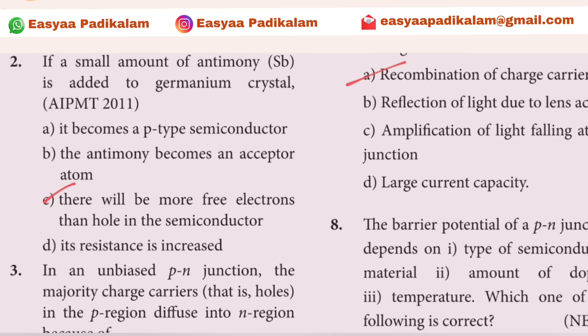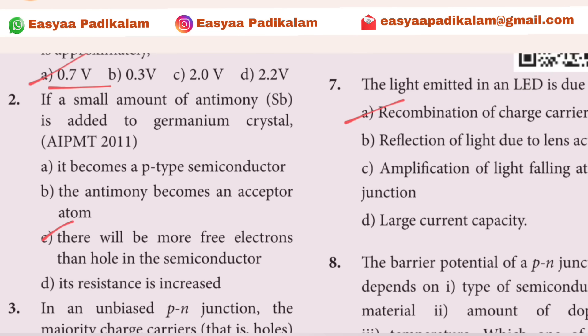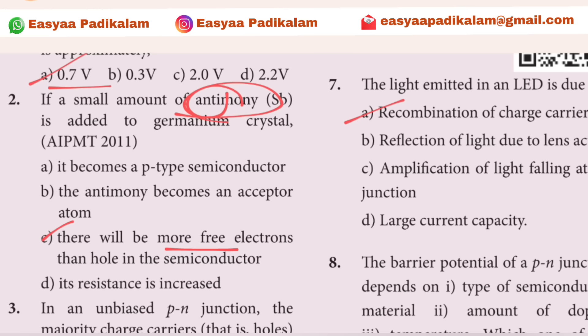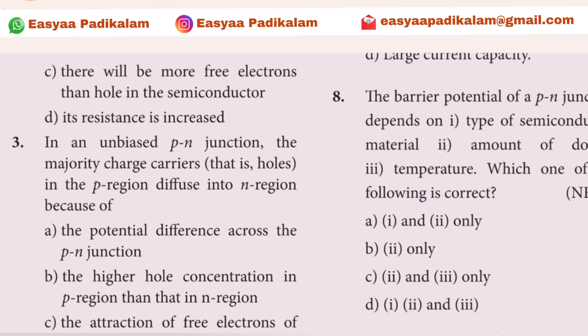Second question: if a small amount of antimony is added, antimony provides more free electrons. More free electrons — the answer is antimony gives more free electrons.